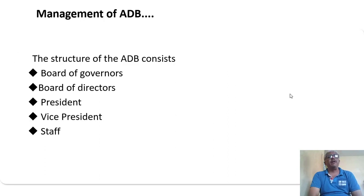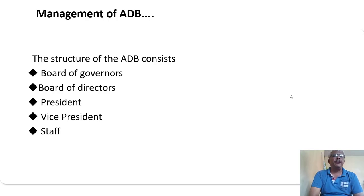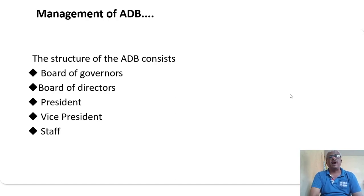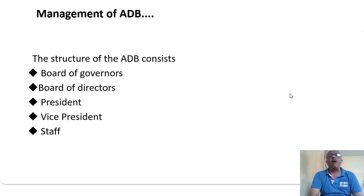The management structure of ADB consists of: Board of Governors, Board of Directors, President, Vice President, and staff. This is the organizational and functioning structure of ADB's management.